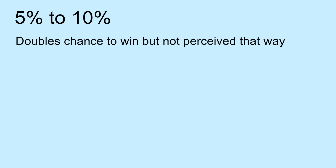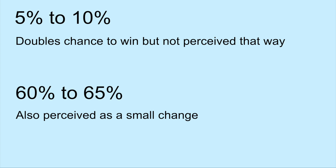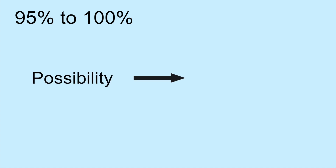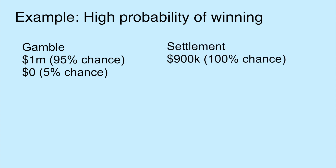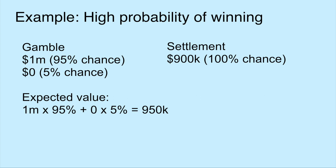A change from 5% to 10%, although it represents a doubling in your chances of winning, the psychological value does not double. Similarly, 60% to 65% is also viewed as a small change. 95% to 100% is again a change in state, this time from possibility to certainty. Let's use another example to highlight this. Let's say you're facing a lawsuit where you have a strong case and will be awarded $1 million. Your lawyer then informs you that there's a small chance you will lose and receive nothing, or you can settle now for a sure sum of $900,000. Let's also say your chances of winning are 95%. Would you take the gamble or accept the settlement? If you're like most people, you would accept the lower settlement. Because you are not taking the gamble, this is a risk-averse approach. Your expected value here is $950,000 — $50,000 higher than the sure sum.